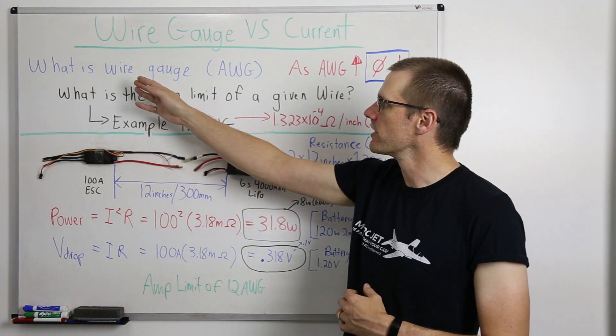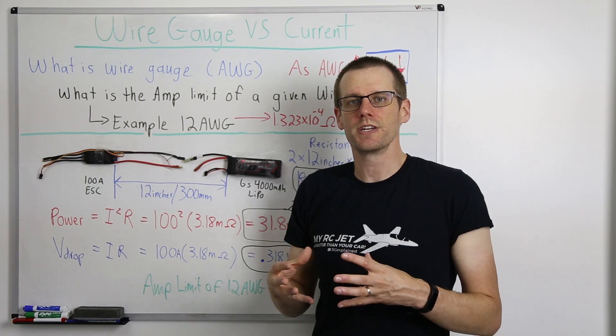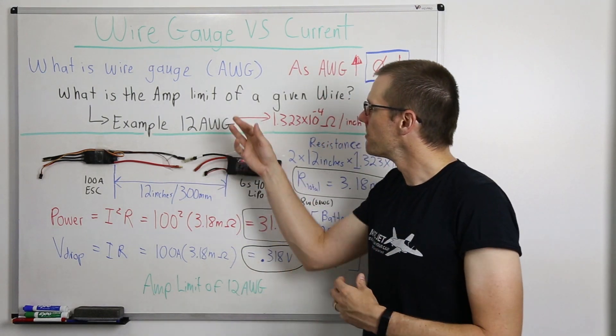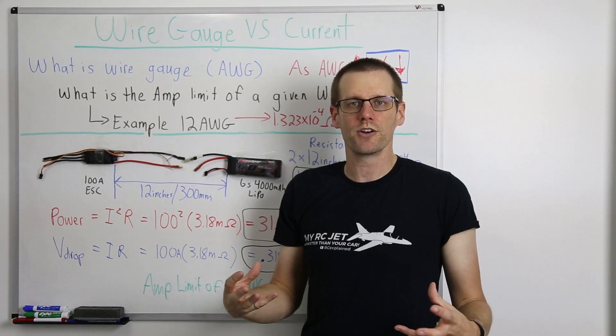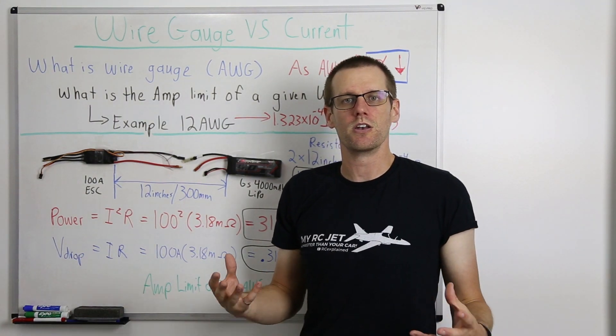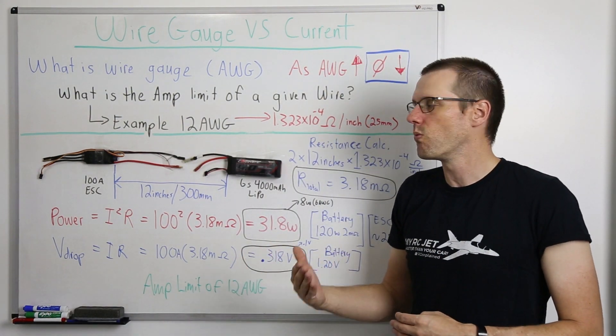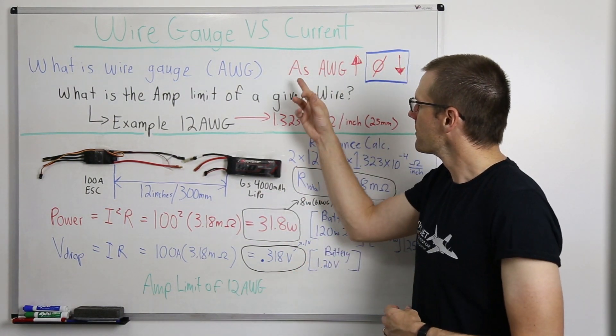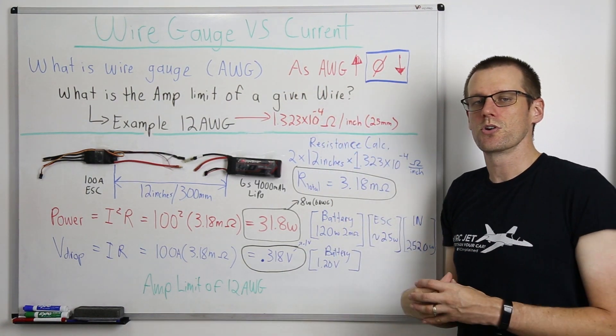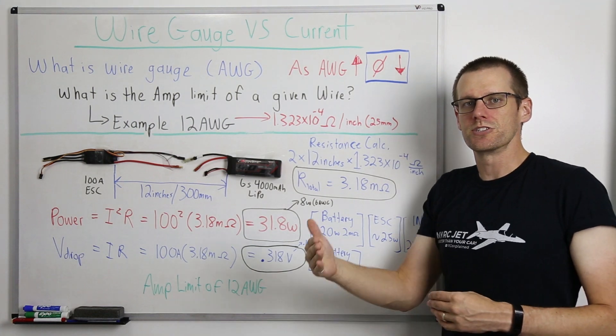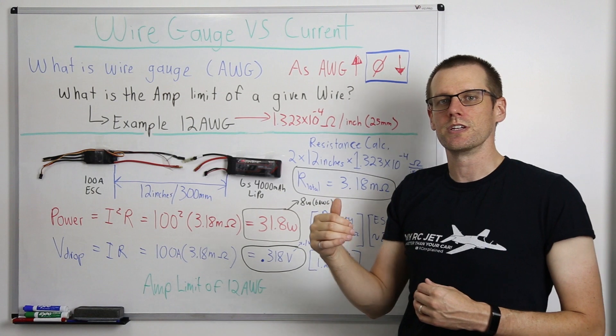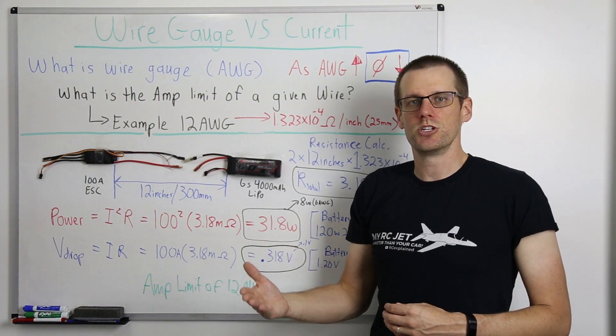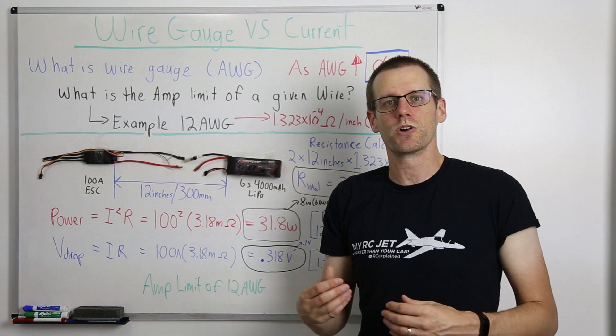The first question that we have up here on the board is what is wire gauge? Well, wire gauge is essentially a set standard that allows us to differentiate two different wires based on their size. On the board, we have this term AWG. This represents the American wire gauge standard. This is something that's used quite frequently here in North America. That is our standard when we talk about wire. It's important to note that this might be used in other parts of the world, but there are other standards that are out there. Another point here is that as the gauge of the wire increases, if you're going from 12 gauge to 14 gauge to 16 gauge and so forth, the diameter of that wire actually decreases.